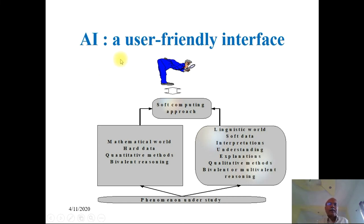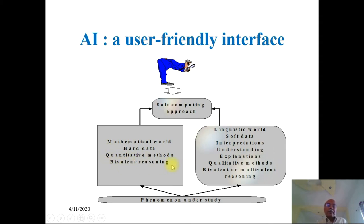This block diagram depicts a user-friendly interface for artificial intelligence. Our phenomenon under study can be classified into two categories. One is the mathematical world, where everything is definite or precise. On the other hand, we have the linguistic world, which is full of soft data, interpretations, understanding, and explanations. In the mathematical world, we have quantitative methods and bivalent reasoning — either true or false, either zero or one. This is crisp logic. In the linguistic world, natural languages are involved, qualitative methods exist, and reasoning may be bivalent or multivalent — with many shades in between true and false.